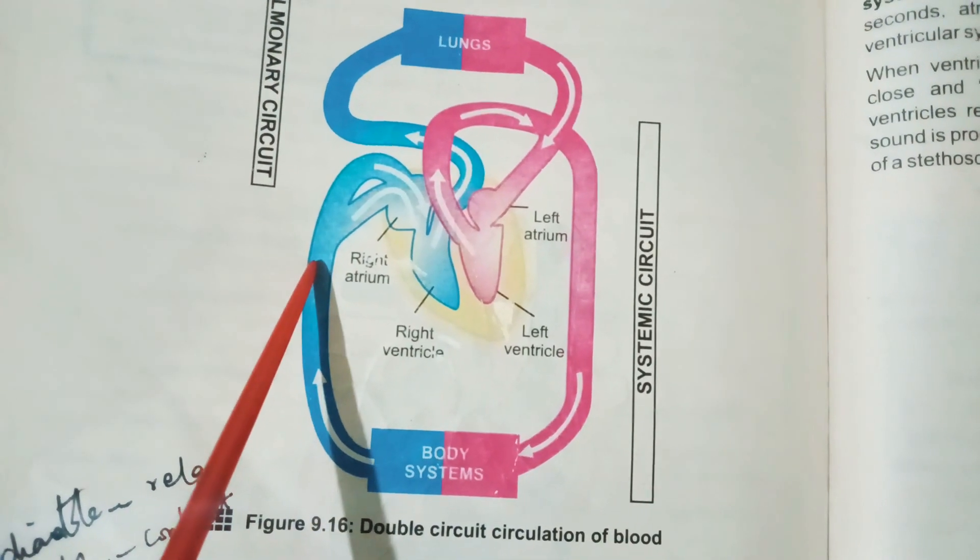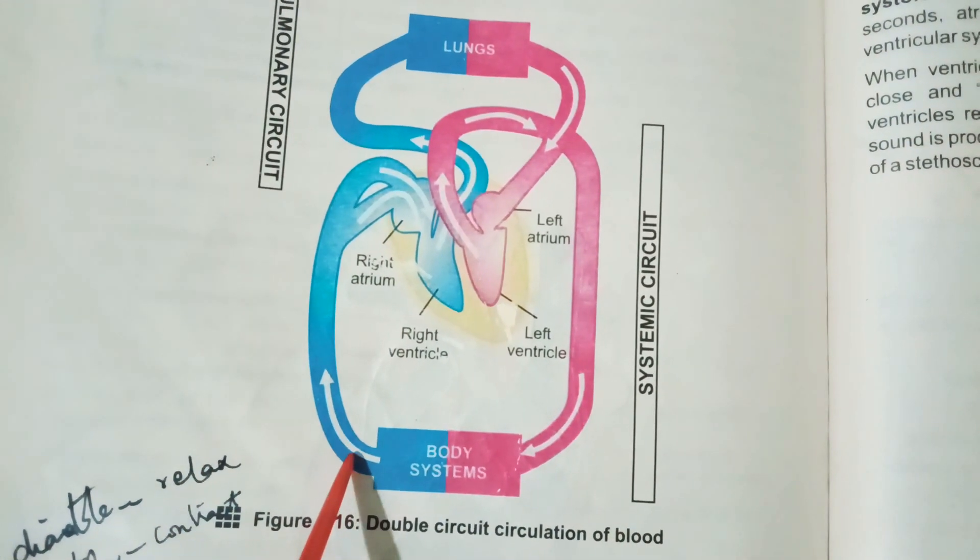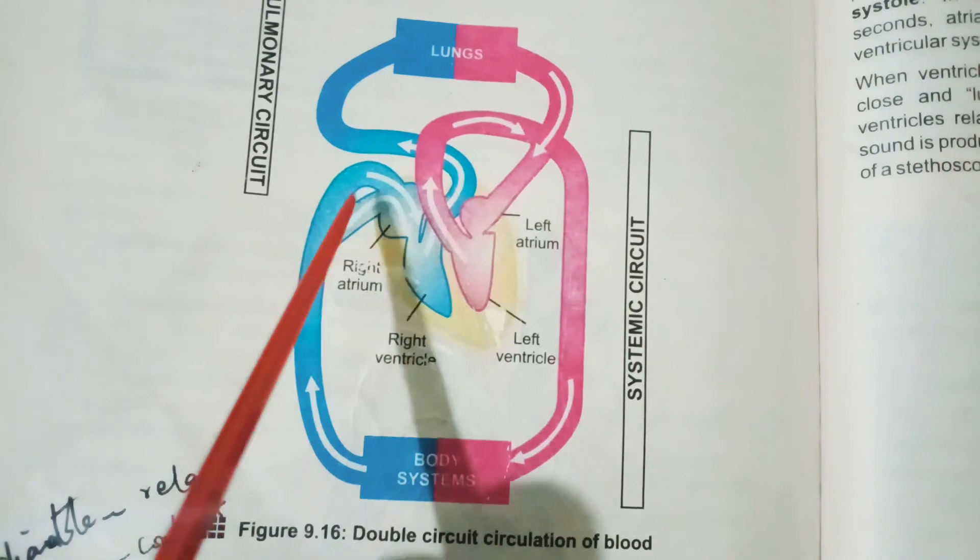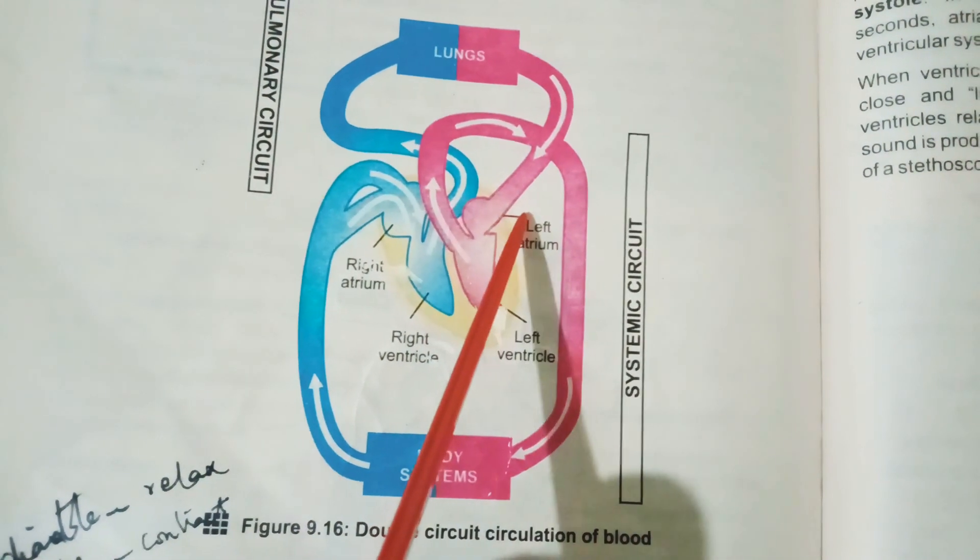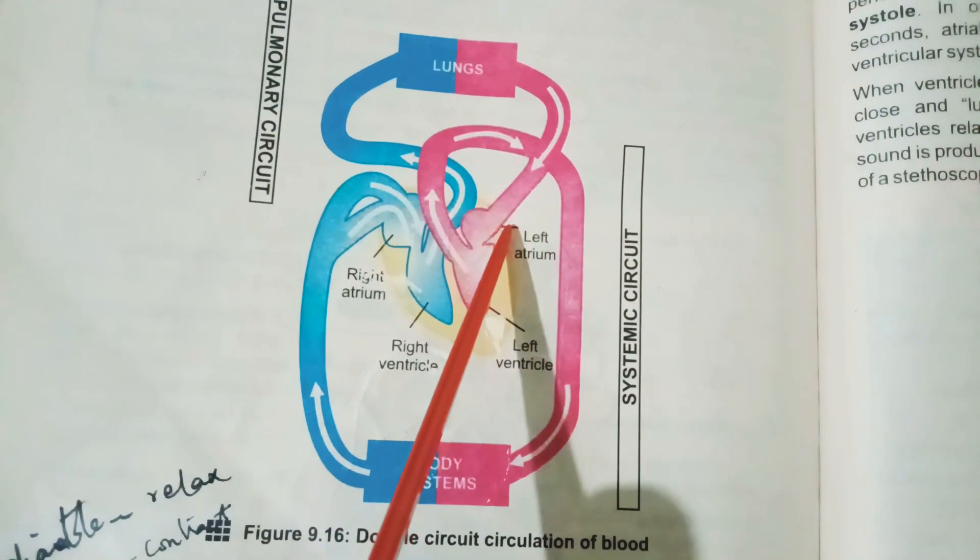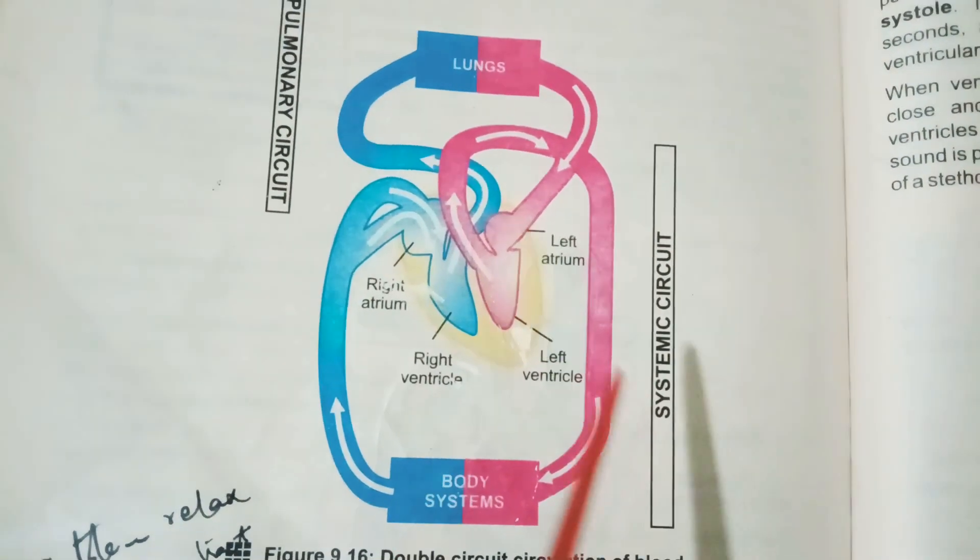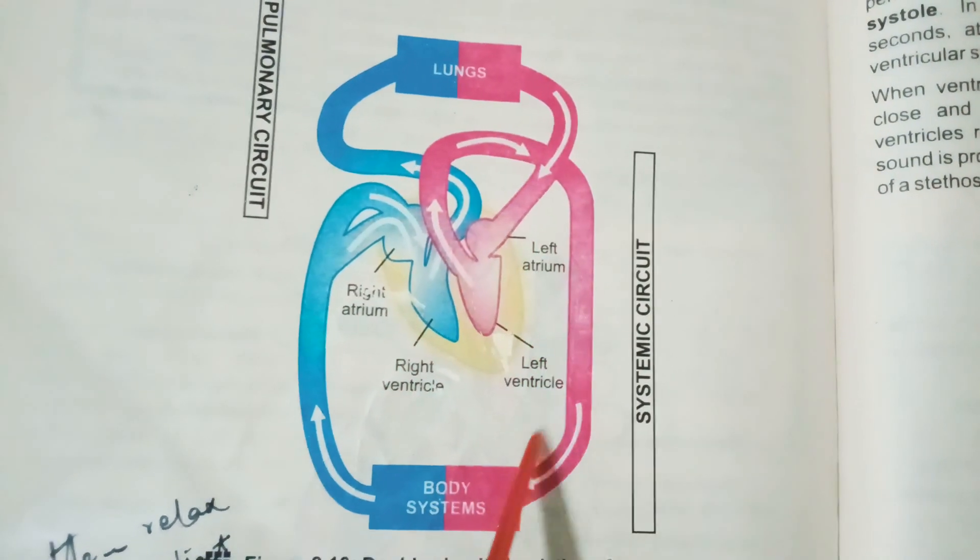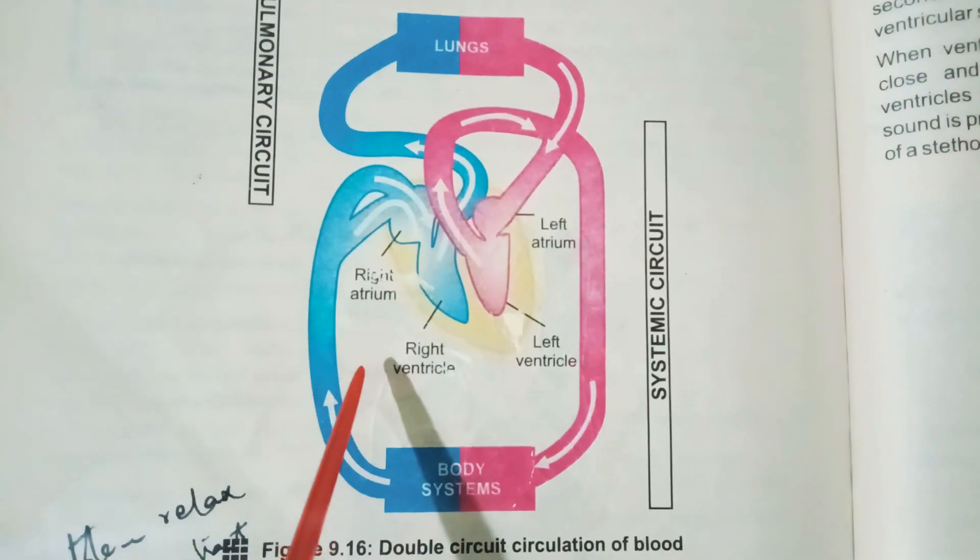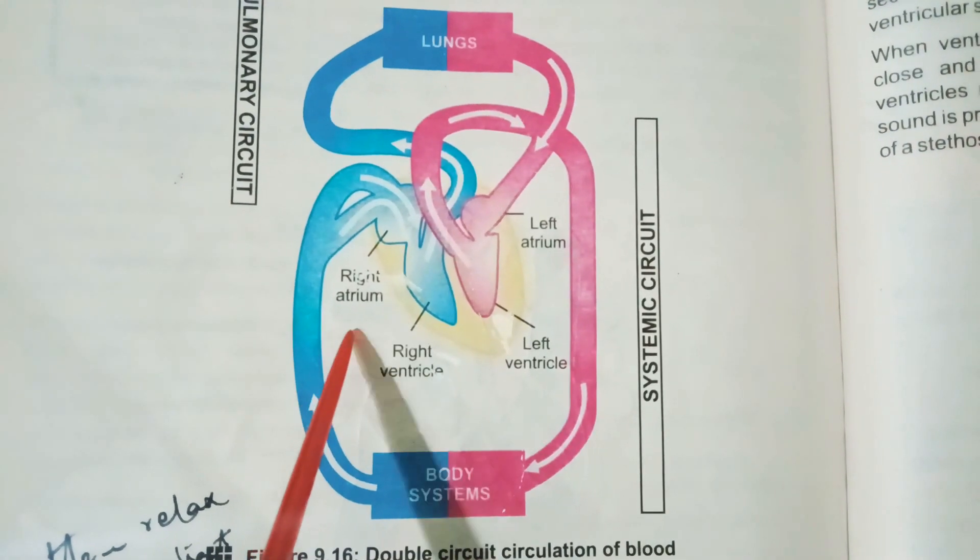The right side distributes deoxygenated blood to the lungs, while the left side collects oxygenated blood from the lungs and distributes it to the body.